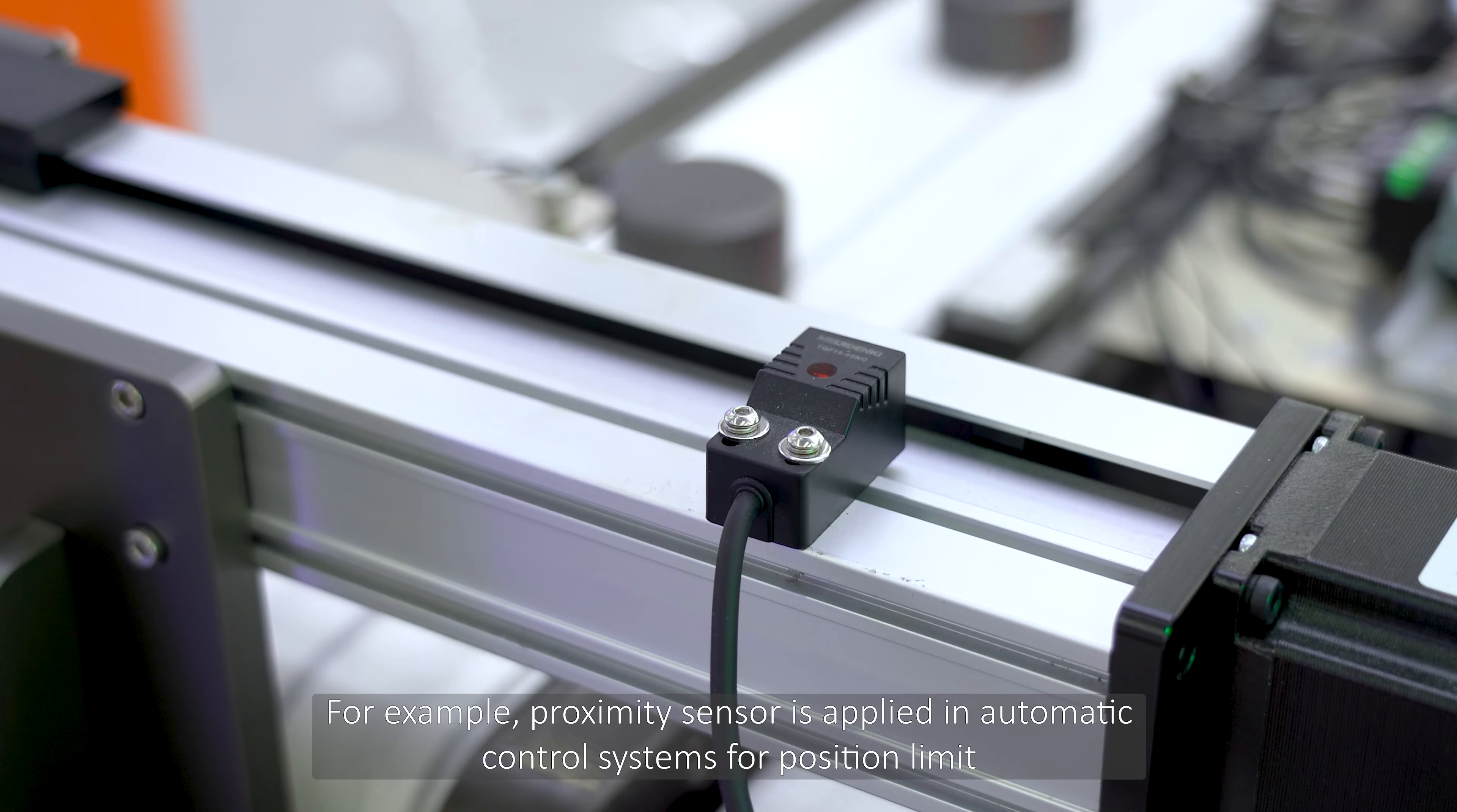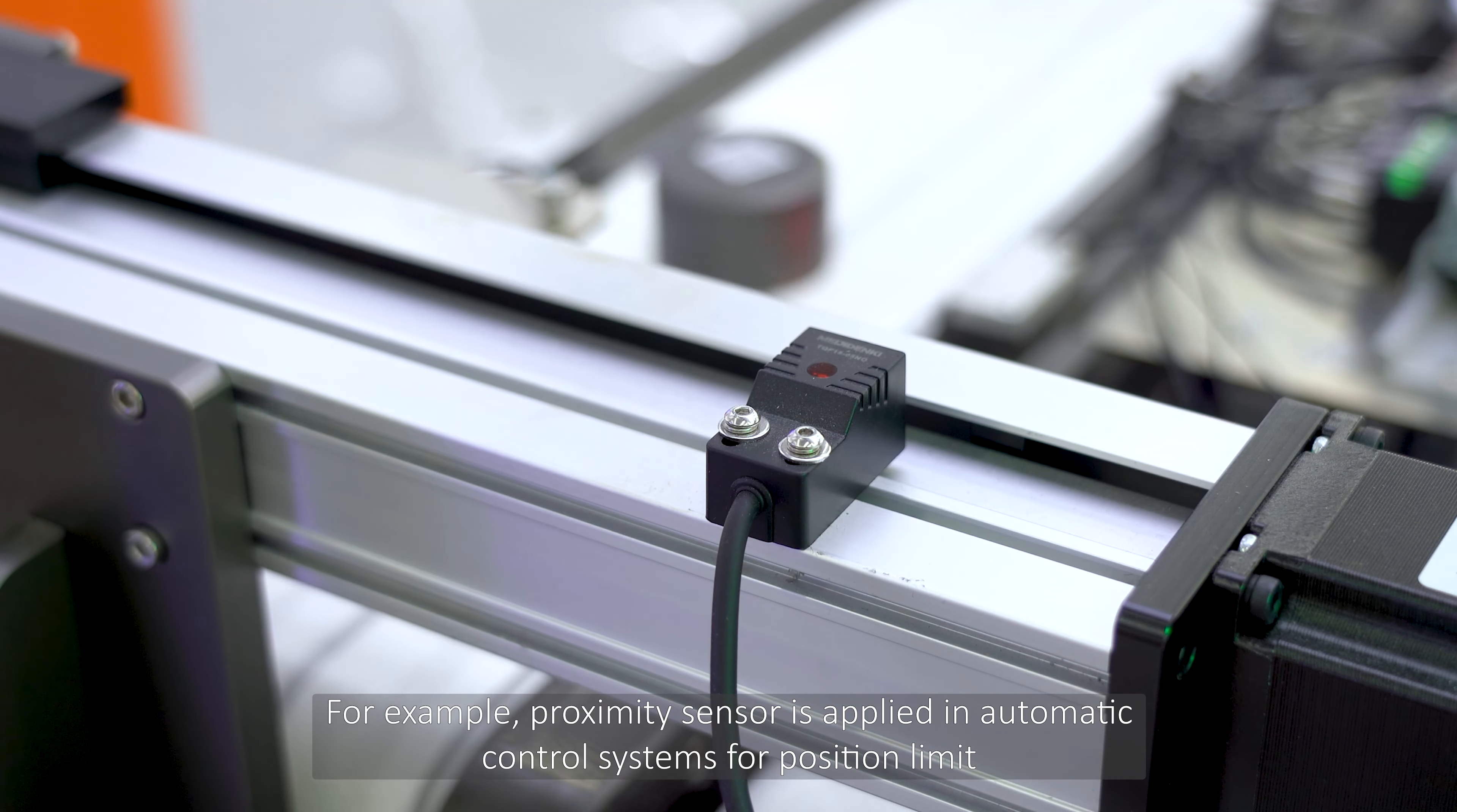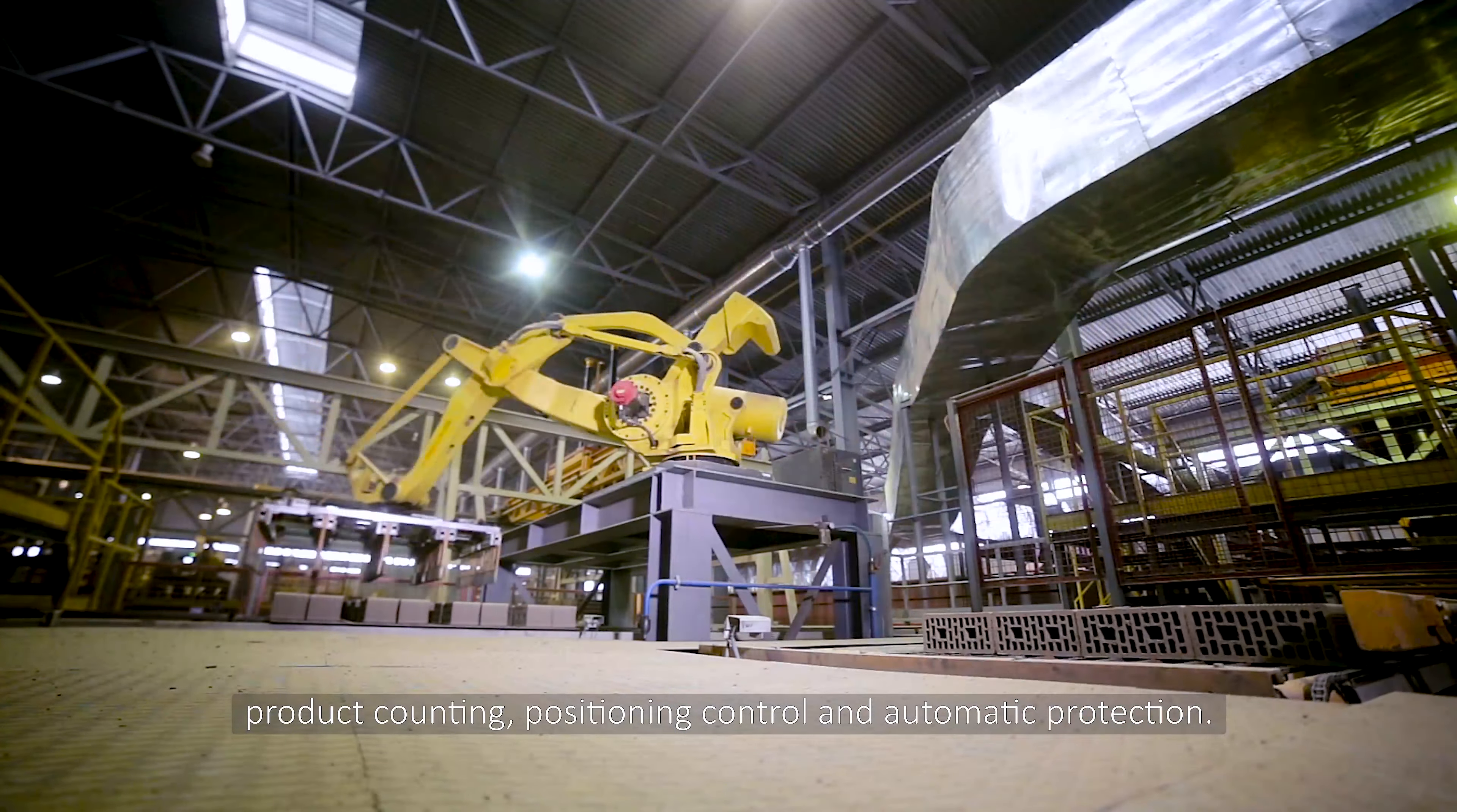For example, proximity sensor is applied in automatic control systems for position limit, product counting, positioning control, and automatic protection.